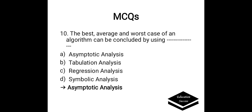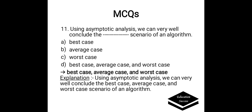The best, average, and worst case of an algorithm can be concluded by using: a) asymptotic analysis, b) tabulation analysis, c) regression analysis, or d) symbolic analysis. Correct answer is asymptotic analysis. Using asymptotic analysis, we can very well conclude the best case, average case, and worst case scenario of an algorithm.